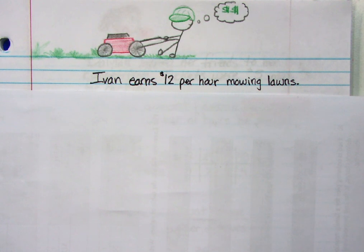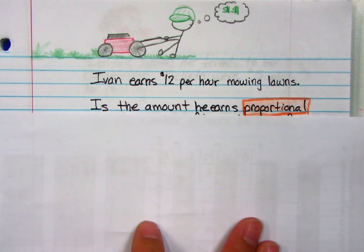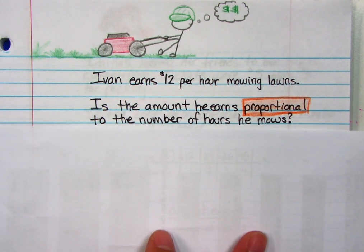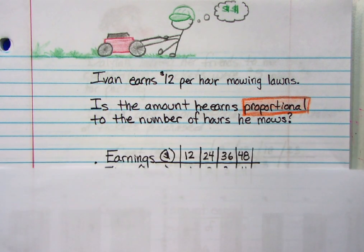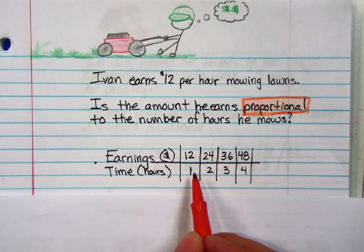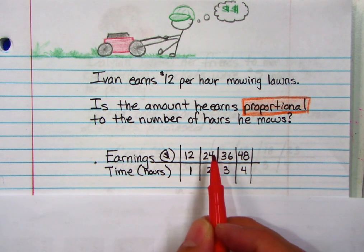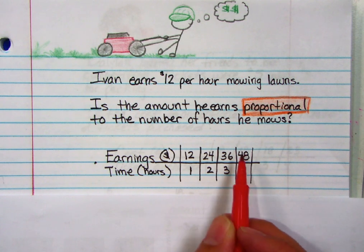Let's take a look at an example. Ivan earns twelve dollars an hour mowing lawns. Is the amount he earns proportional to the number of hours he mows? That's the question. Is it proportional? Well, let's figure this out. I made myself a chart. So if he works one hour, he makes twelve dollars. Two hours, twenty-four dollars. Three hours, thirty-six dollars. And four, forty-eight dollars.